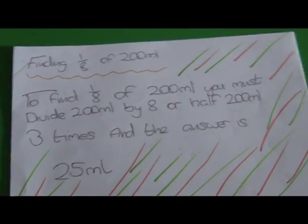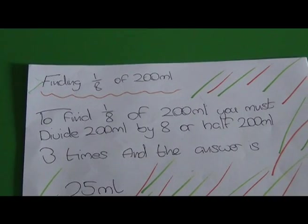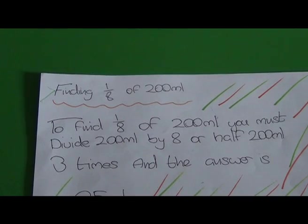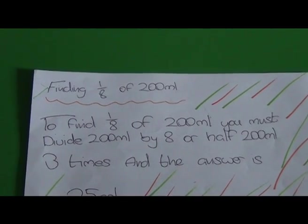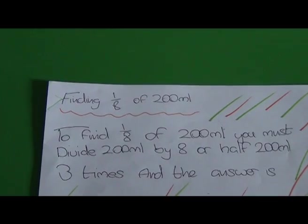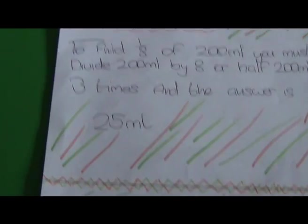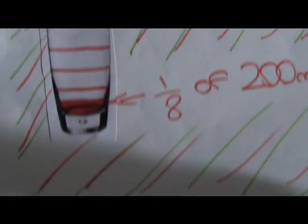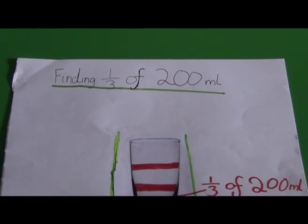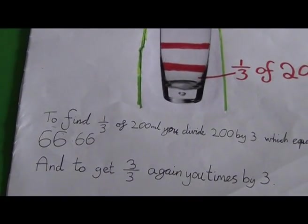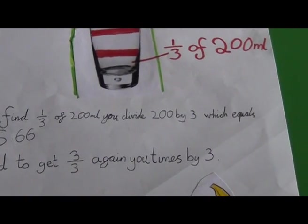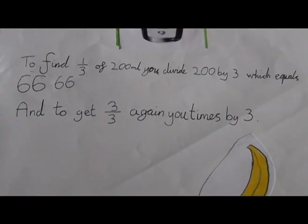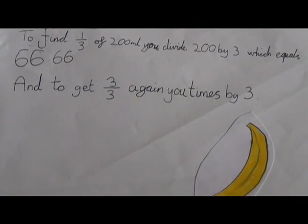Finding one-eighth of 200ml. To find one-eighth of 200ml, you must divide 200 by eight, or half 200ml three times, and the answer is 25ml. Finding one-third of 200ml: to find one-third of 200ml, you divide 200 by three, which equals 66.66 recurring. And to get three-thirds again, you times by three.